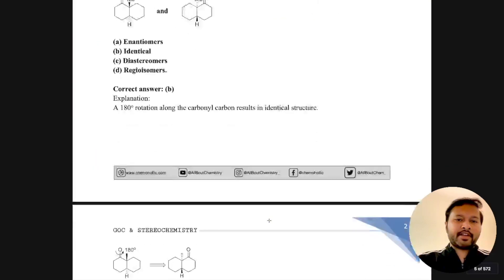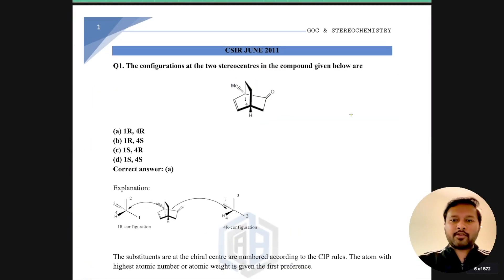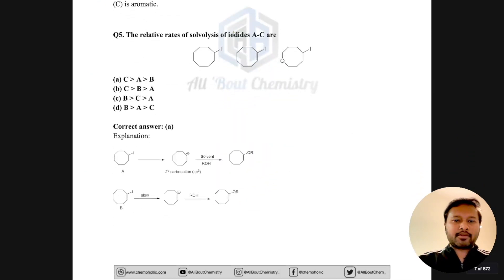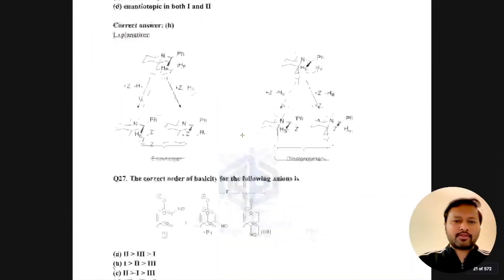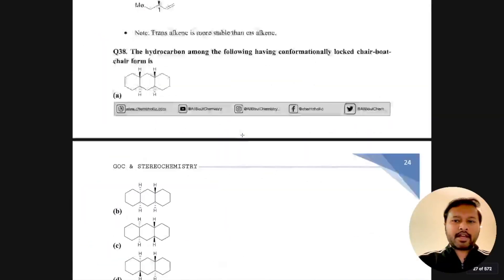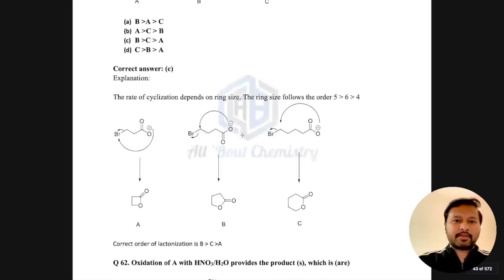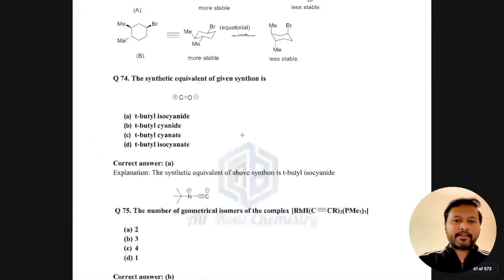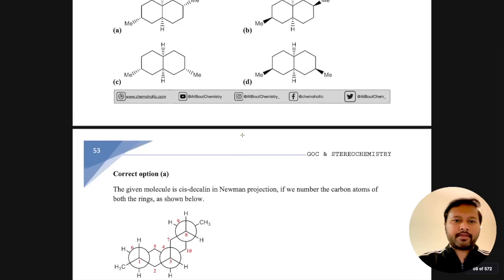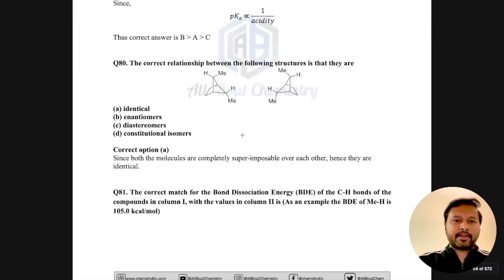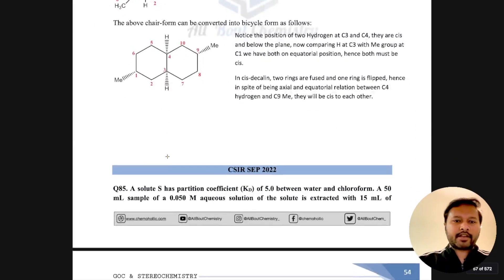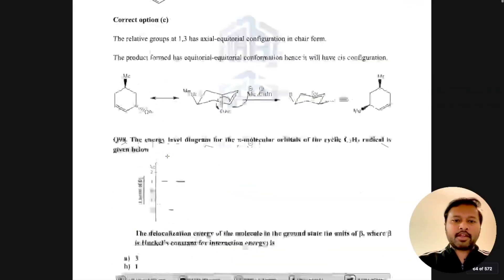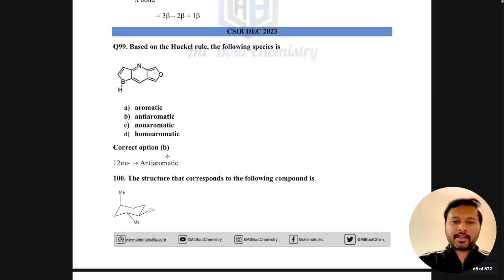Starting from any topic, you'll see the topic name at the top so you don't get lost. Answers are given right next to the questions. The recent questions are also included — for example, questions from June 2021 are solved in detail so you understand how to approach them, and that's the sole motive of making this ebook.